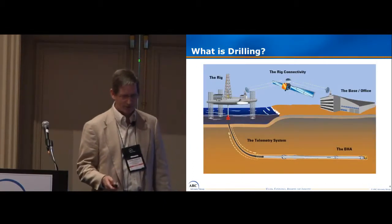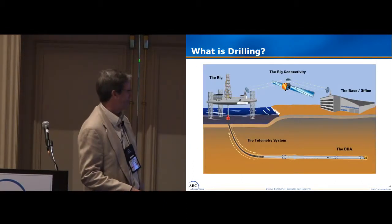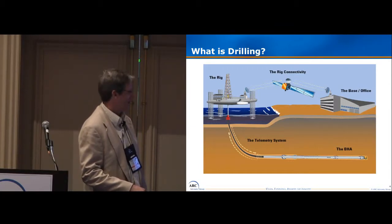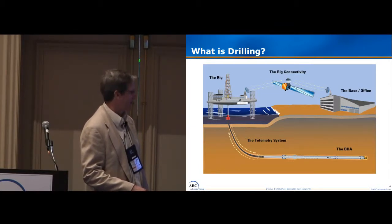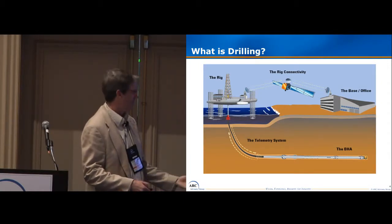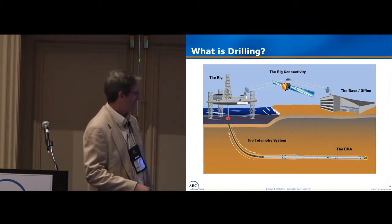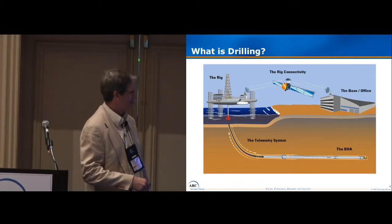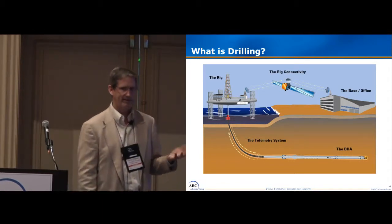I'm going to cover what drilling is. You have a BHA — the bottom hole assembly — down here. It usually consists of a bit, some sort of motor, measurements, and sometimes a hole opener. This is drilling at the bottom of a hole, which can be five miles away. It's attached to a drill string which is usually rotating, and the bottom hole assembly communicates with the rig via mud pulse.